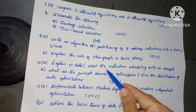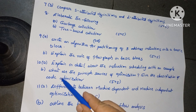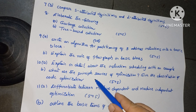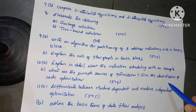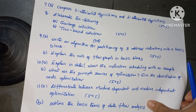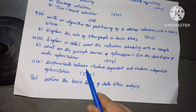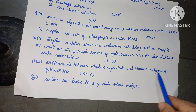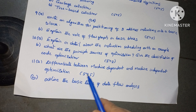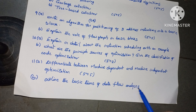Question 10A: explain in detail about instruction scheduling with an example. B bit: what are the principal sources of optimization? Give the classification of code optimization — 5 plus 5, 10 marks. Question 11A: differentiate between machine-dependent and machine-independent optimization, 5 marks. B bit: outline the basic terms of data flow analysis, 5 marks.